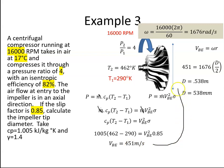So we take that and we stick it in here. So VBE, which is 451, is equal to omega times R, and R is just D over 2. And when we solve for that, we get the diameter is 538 millimeters.